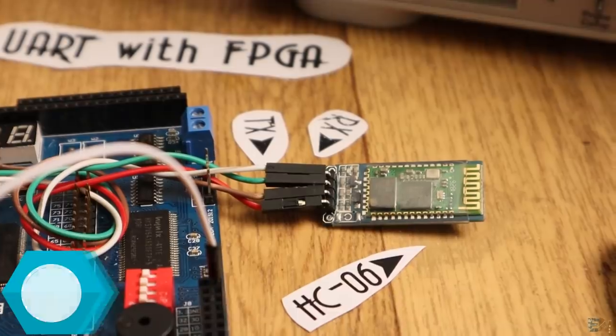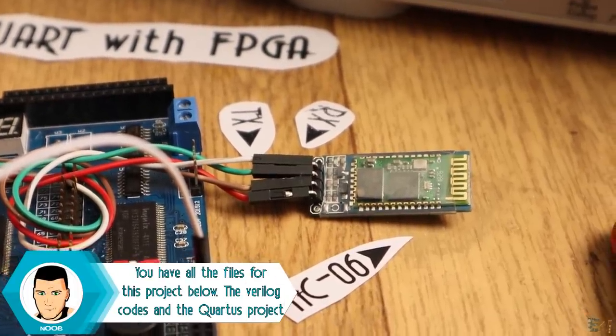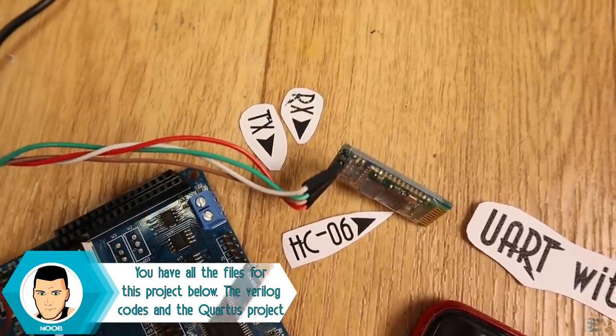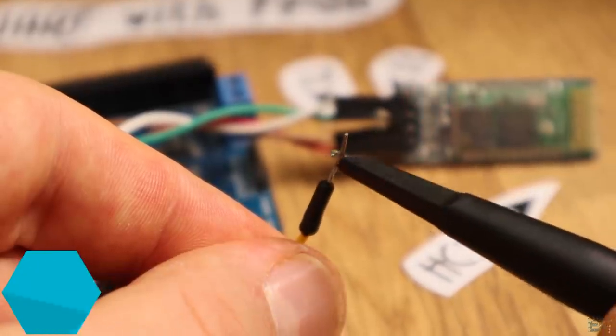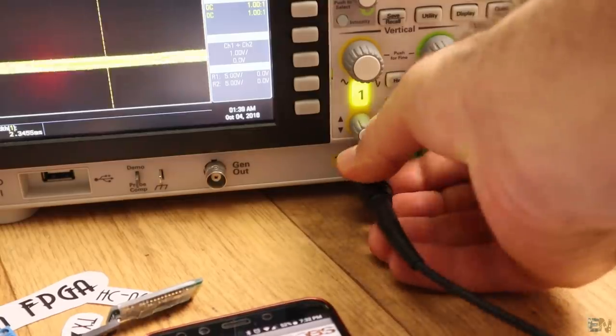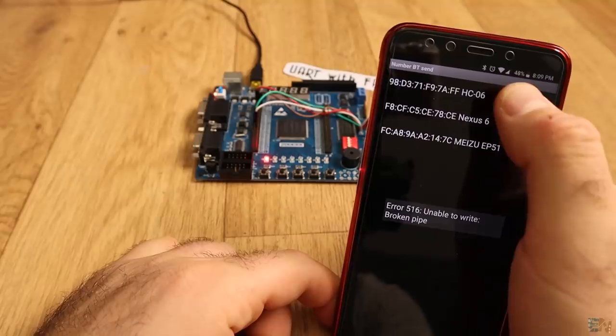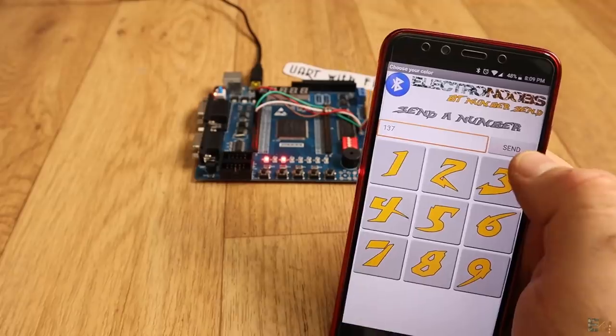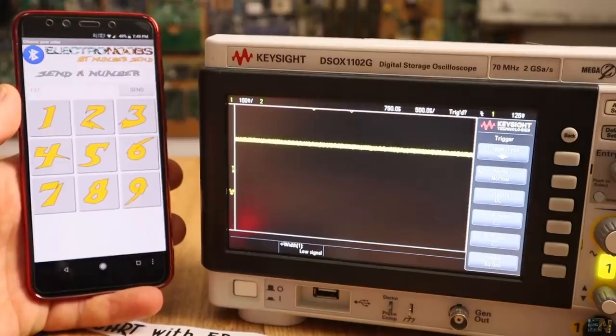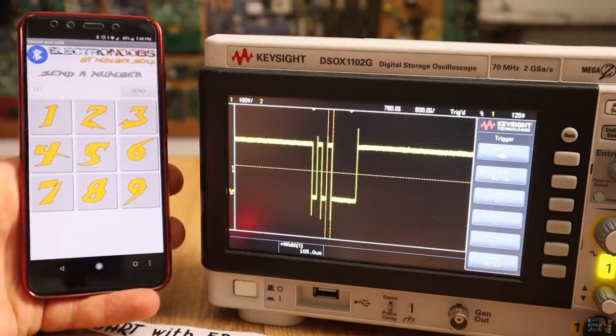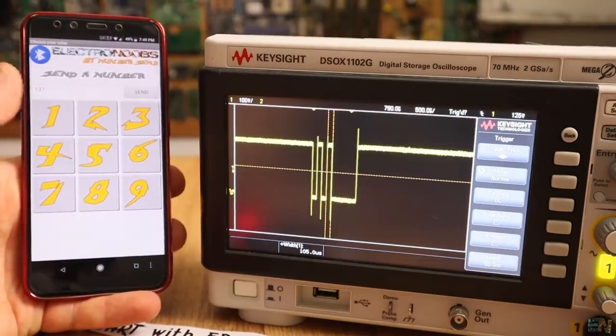So with just one pin we can send the data and with two we can send and receive and we don't need anything else. Here I connected the UART Bluetooth module and hooked the oscilloscope to the RX pin so we could see how the signal is. I now connect my smartphone to the module and I will send the number. Here we have the signal.